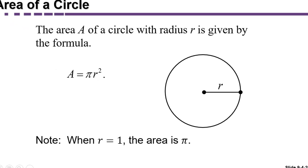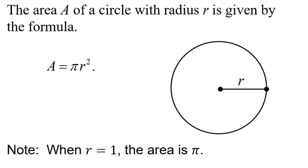The area of a circle also involves the value pi and it's given by area equals pi R squared. Notice that when the radius is 1, the area is pi.